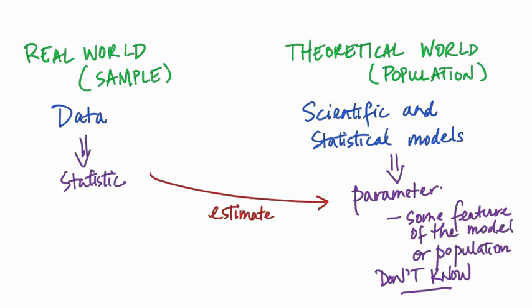We're going to think about this in a somewhat backwards way in this video. But going forward, it's important to understand what this backward thinking means for the real world. For now, we're going to assume that we know the theoretical world — that is, we know the parameters of our models or the population values — and then for a few situations, we're going to look at what the statistics we would use in the real world to estimate the parameters might look like.